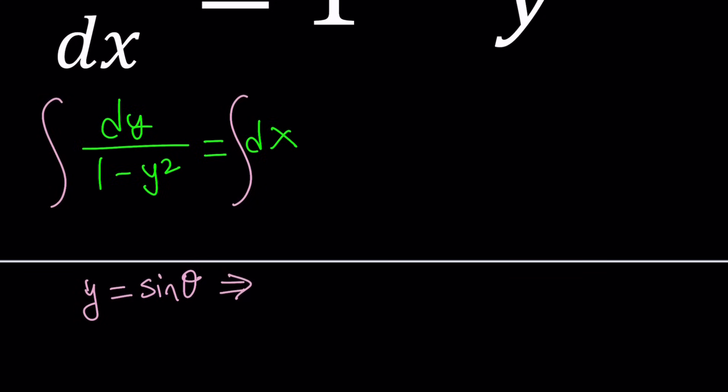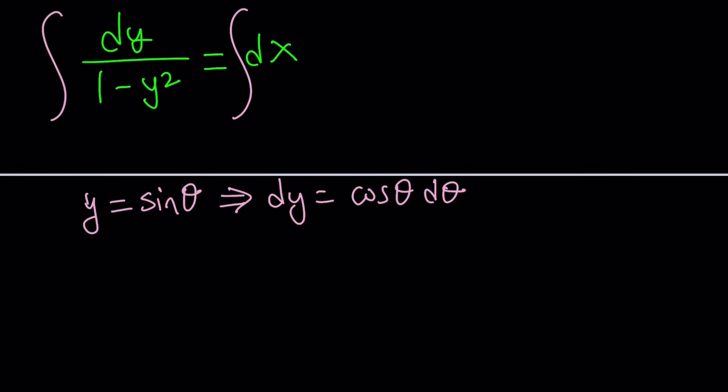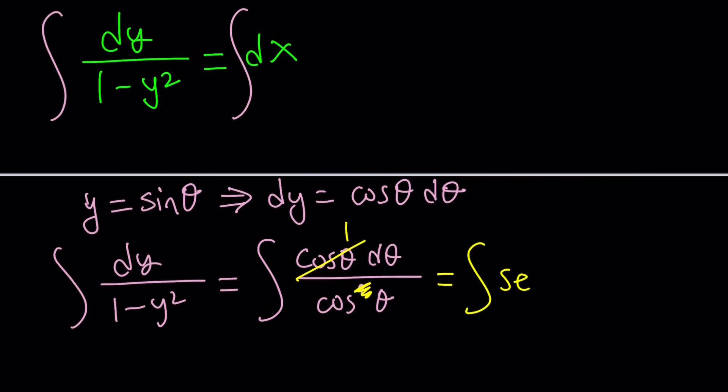But if y is sine theta, dy is going to be cosine theta d theta. It's like differentiating, but we just add the d theta. And now if you do the replacements, dy over 1 minus y squared becomes cosine theta d theta divided by 1 minus sine squared, which is cosine squared theta. And then you can simplify this. Cosine and cosine squared, one of them will be gone. You'll have a 1 at the end. And this will be like 1 over cosine theta, which is secant theta d theta.